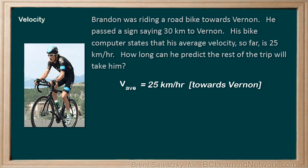If he used 12 kilometers per hour for his prediction, the time would be way too long. And if he used 50 kilometers per hour for his prediction, the time would be way too short. Assuming that the road is similar for the remainder of the trip, the average velocity should give a pretty good estimate.